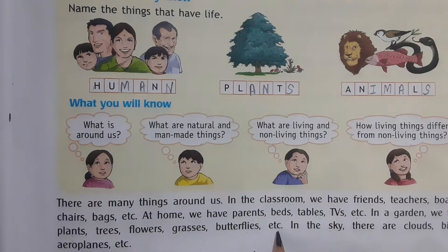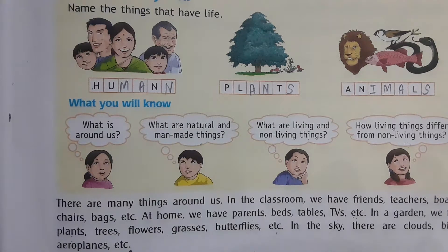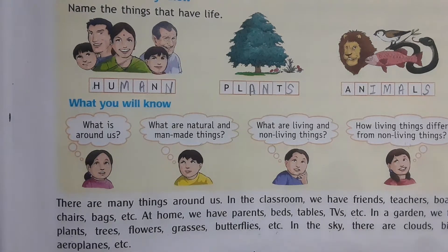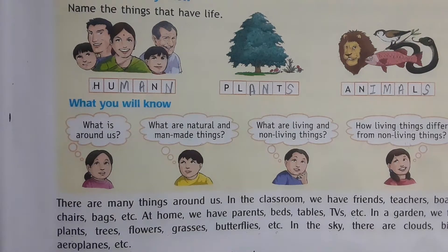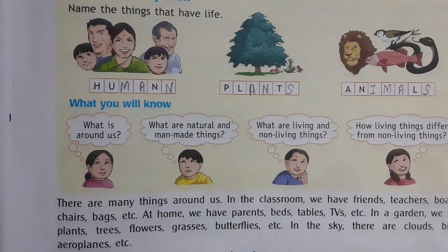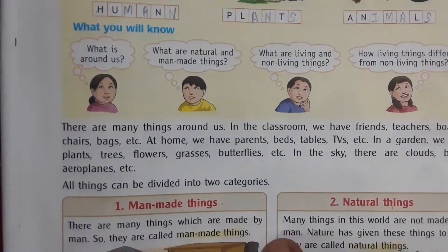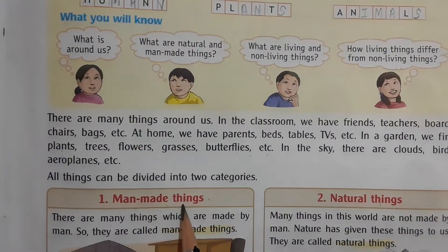These are all the things we see around us. Now all these things can be divided into two categories. The first category is man-made things and the second category is natural things.